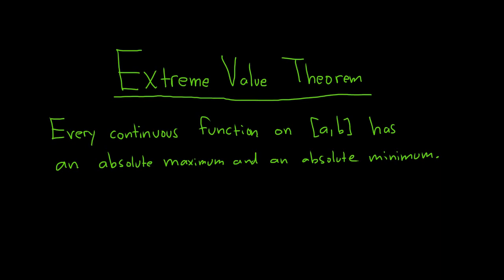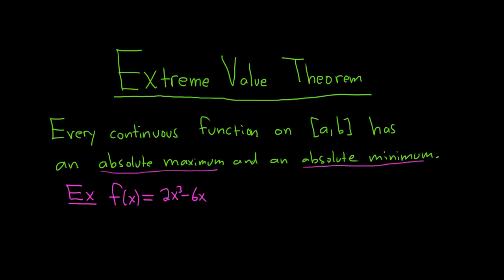Let's go ahead and do an example of applying the extreme value theorem to find the absolute maximum and minimum of a function on a closed interval. f(x) is going to be equal to 2x³ minus 6x, and we're going to find the absolute maximum and absolute minimum of this function on the interval.